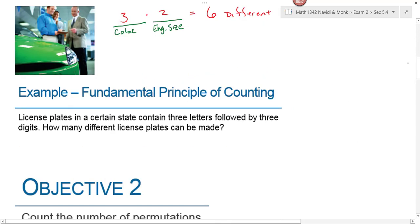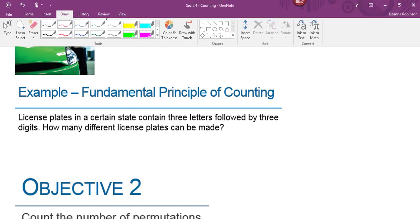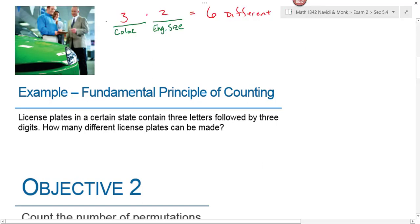Here's an example problem that deals with the fundamental principle of counting. License plates in a certain state contain three letters followed by three numbers. How many choices do I have for the first letter on the license plate? 26. How many choices for the next letter? 26, because nothing in the problem said that I couldn't let letters repeat, right? And then for the next letter. How many choices for the first number?